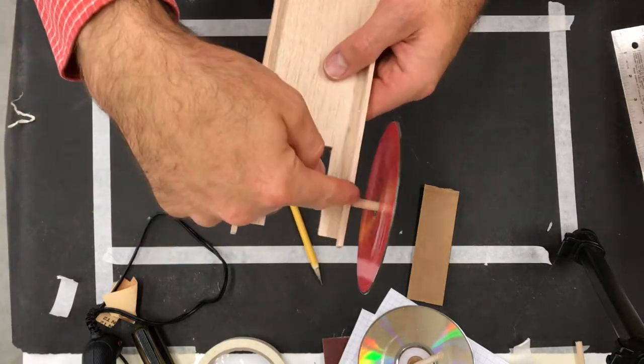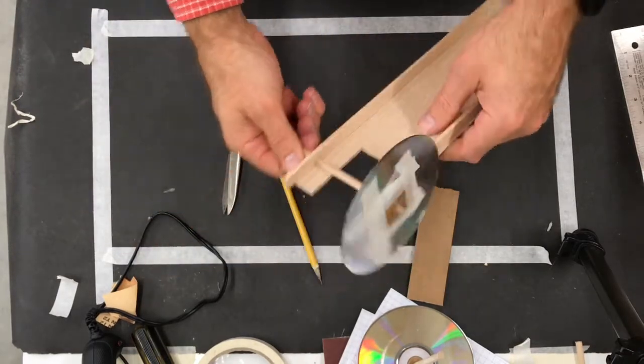Again, the glue's on the outside, not the inside. Okay. That's how you make your wheels. Good luck.